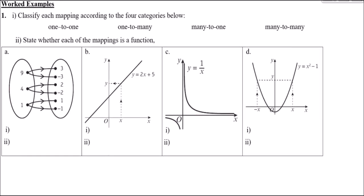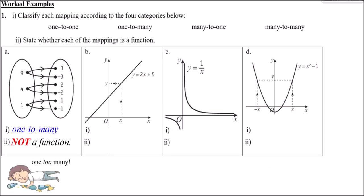Now let's do some examples. For four mappings A, B, C, D, we need to categorize them as one-to-one, one-to-many, many-to-one, or many-to-many, and state whether each is a function. Mapping A shows each input mapped to multiple outputs — for example, 9 is mapped to two outputs. This is a one-to-many mapping, and a one-to-many mapping can never be a function.